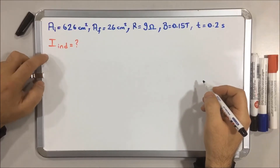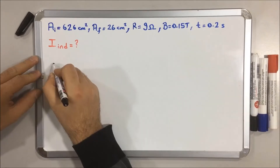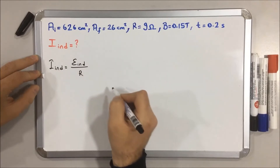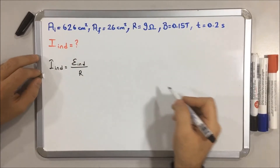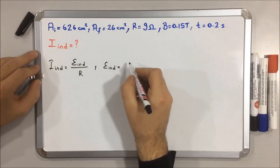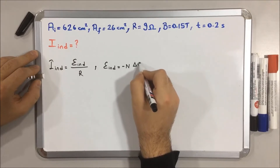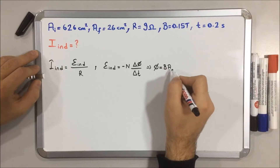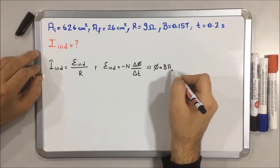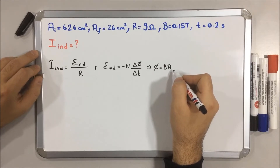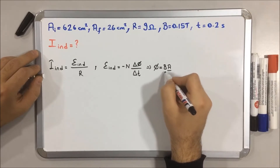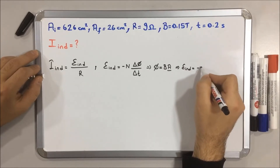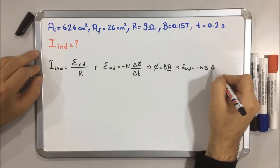Hello, welcome everyone. The question says calculate the induced current. Induced current equals EMF induced over R, so we have to calculate EMF induced first. EMF induced equals minus N times delta phi over delta t, and phi equals B times A. Because the magnetic flux density is perpendicular to the page, we use this formula. Since A changes and B is constant, EMF induced equals minus N times B times delta A over delta t.